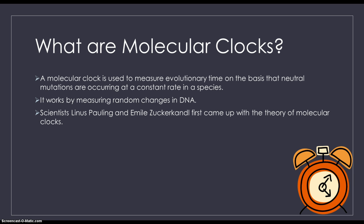So what are molecular clocks? A molecular clock is a clock used to measure evolutionary time on the basis that neutral mutations are occurring at a constant rate in the species. It works by measuring random changes in the DNA, or as we all know, neutral mutations. And scientists Linus Pauling and Emile Zuckerkandl first came up with the theory of molecular clocks.